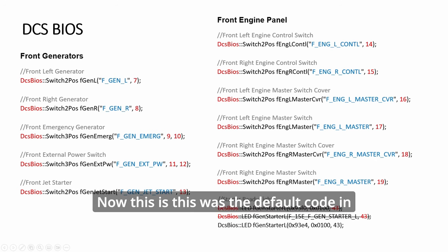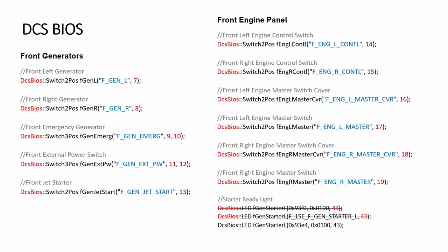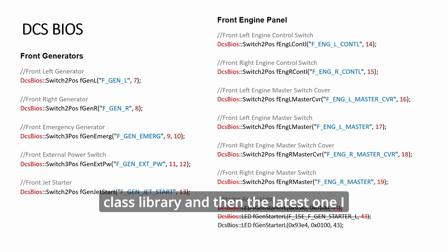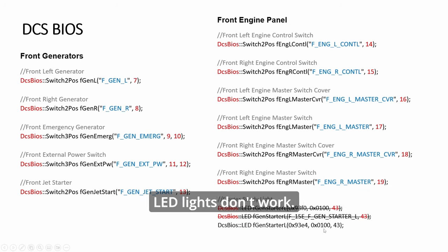Alright, so this is the DCS code. Now this was the default code in the beginning which doesn't work and then the latest DCS BIOS. They changed the naming convention as mentioned in the RICP update that they use this convention which cannot compile. Probably missing something in some class and then the latest one. So this is the one that works. Whenever LED lights don't work, I check the code in board and this is the one that works.